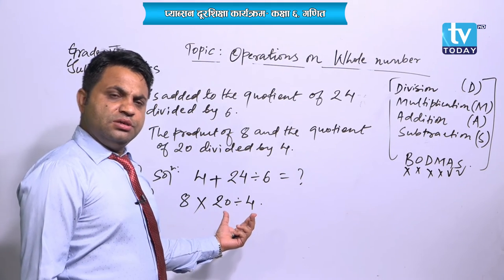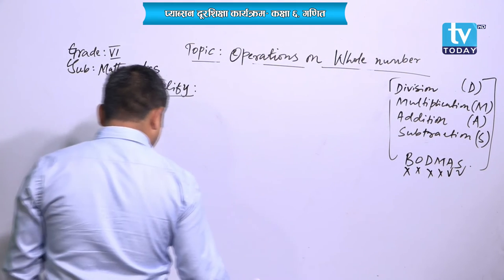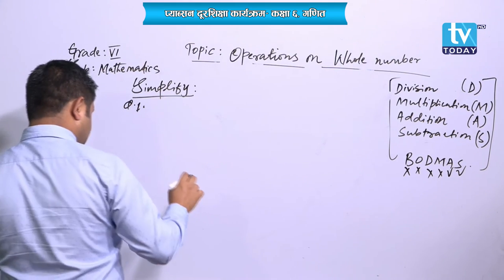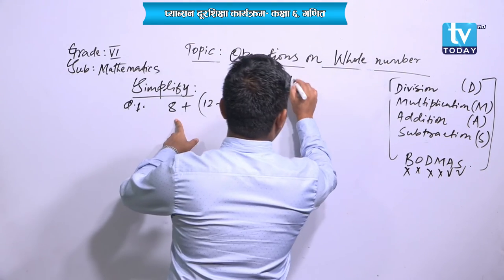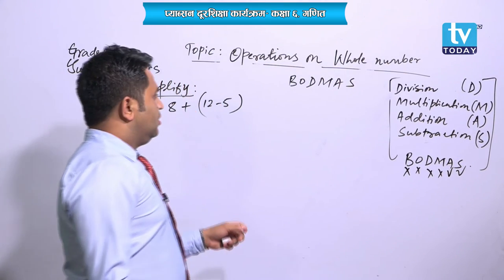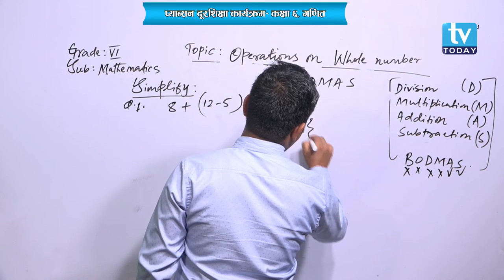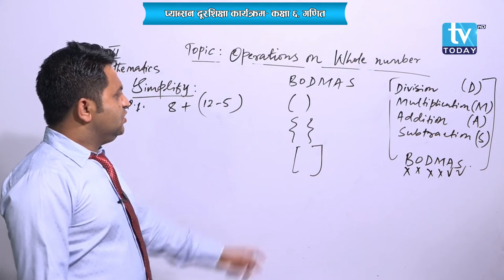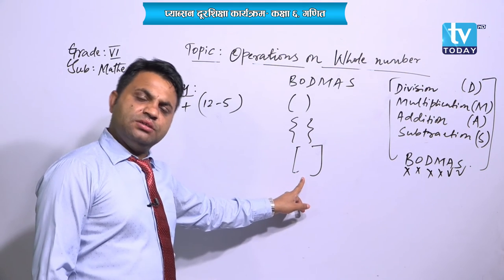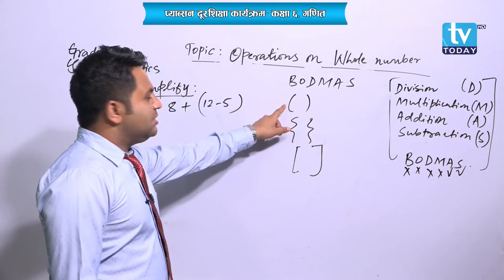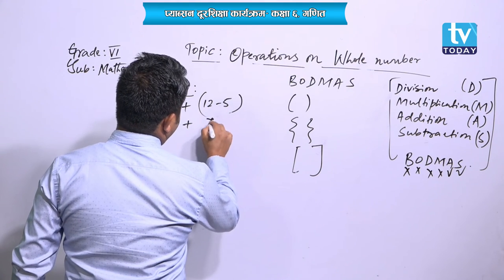Now another question: Simplify 8 plus 12 minus 5. In the BODMAS rule, B means bracket. There are different types of brackets: small bracket, curly bracket, and large bracket. First you have to perform the work inside the small bracket, then curly bracket, then big bracket. Here there is only a small bracket, so the solution is straightforward: 8 plus 12 minus 5 gives 15.